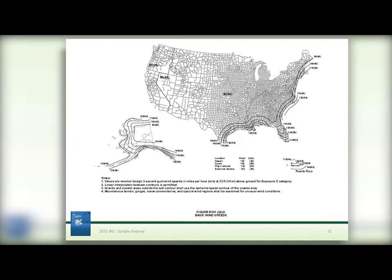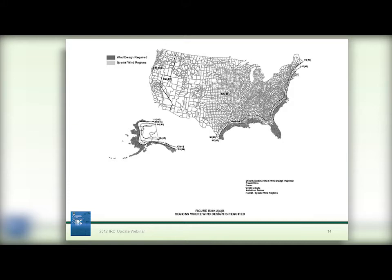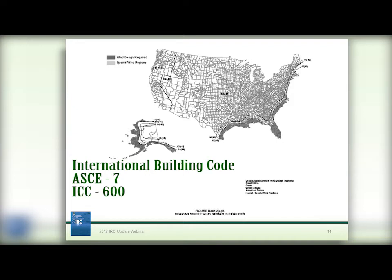Here is that new map. Another new map has been introduced to specifically indicate the geographic locations that require wind design. In this context, wind design means an engineered design in accordance with the International Building Code or ASCE 7, or design in accordance with ICC standard 600, the Wood Frame Construction Manual, or AISI standard S230. The areas requiring wind design generally correspond to areas with a nominal wind speed of 110 miles per hour or greater.